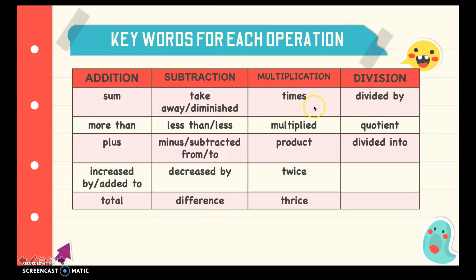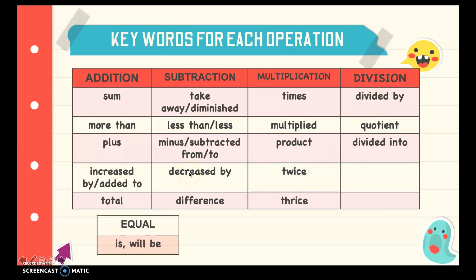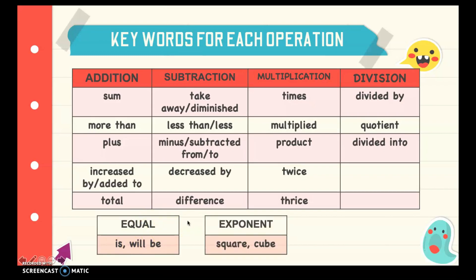And for multiplication, we use the word times, multiplied, product, twice, thrice. For division, we have divided by, quotient, divided into. We also have our equals sign — the word is, or will be. And for the exponent, we can have the square of, or the cube of.